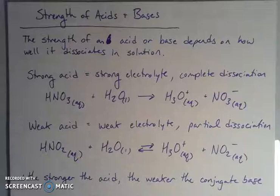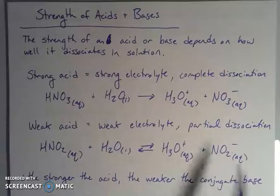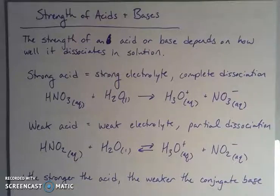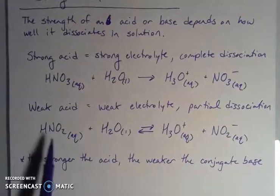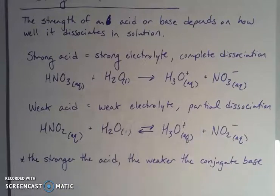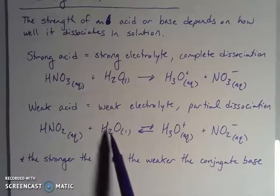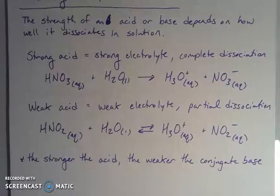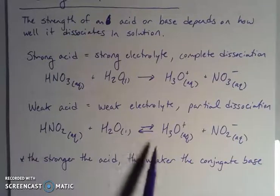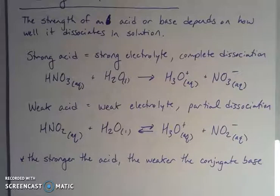Weak acids are the exact opposite. They're weak electrolytes - they don't put a lot of ions into solution. We say they only partially dissociate. If I take nitrous acid from the nitrite ion, nitrous acid is a weak acid. When I react it with water, it forms hydronium and the nitrite ion, but this reaction is also going in the reverse direction. These reversible arrows indicate that this reaction is in equilibrium. It will reach an equilibrium point.